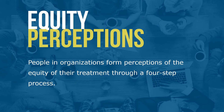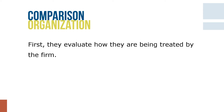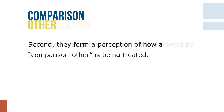People in organizations form perceptions of the equity of their treatment through a four-step process. First, they evaluate how they're being treated by the organization. Second, they form a perception of how a comparison other is being treated. The comparison other might be a person in the same work group, someone in another part of the organization, or even a composite of several people scattered throughout the organization.